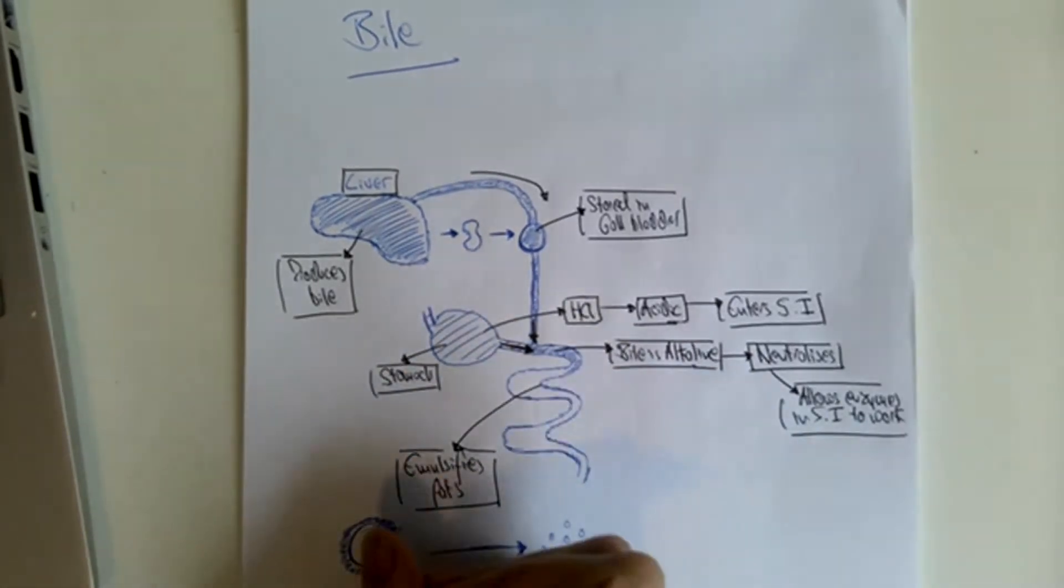What this means is that fat is made up of large droplets, and the bile surrounds it.